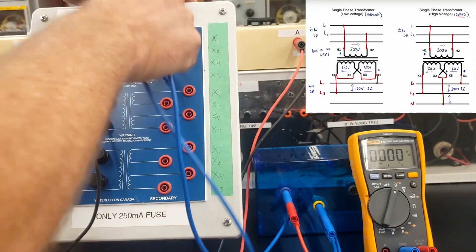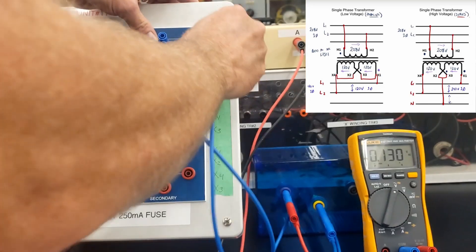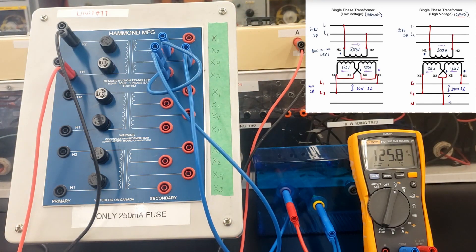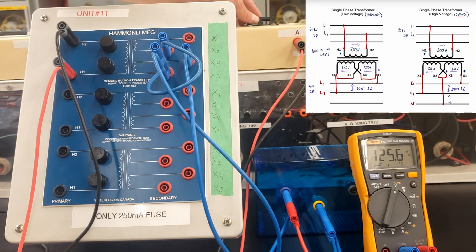That voltage we saw was 125. And then the voltage between X3 and X4 will also be 125 volts. Again, high because we don't have a physical load connected to the secondary of this winding.